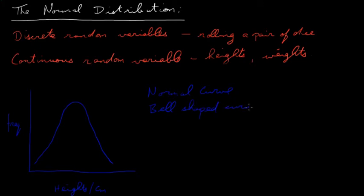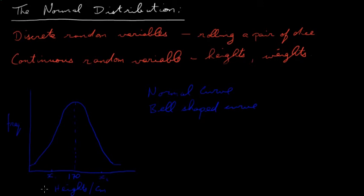The bell-shaped curve tails off at both ends. If we say the mean height is 170 centimeters, we can mark a height below the mean — x1 — say 160 centimeters, and a height above the mean — x2 — say 180 centimeters.